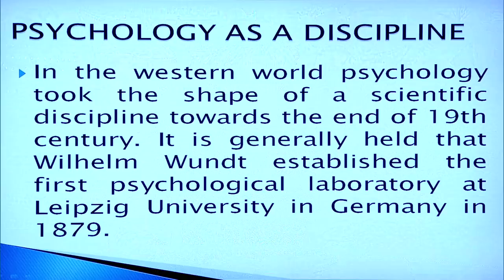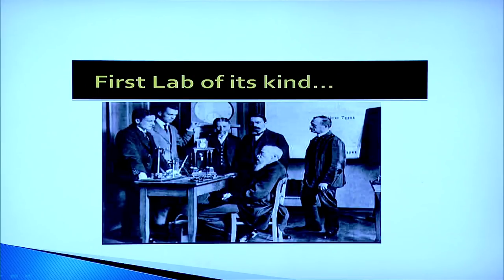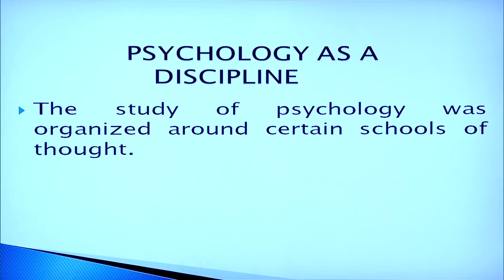In the western world, psychology took the shape of a scientific discipline towards the end of the nineteenth century. It is generally held that William Wundt established the first psychological laboratory at Leipzig University in Germany in 1879. The study of psychology as a discipline was organized around certain schools of thought — various psychologists were trying to understand human behavior from their own perspectives, and each had its own school of thought and theories of understanding human behavior.